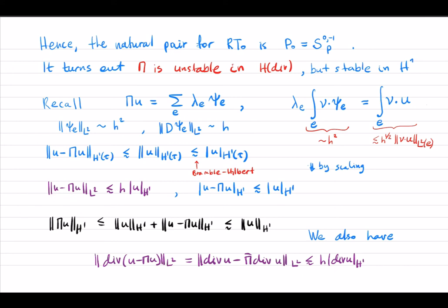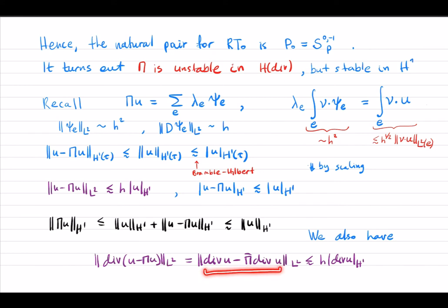To evaluate the H(div) error of u minus pi u, we also need the L2 norm of the divergence of the error. We write this as divergence u minus pi-bar times divergence u using the commuting diagram property, and then use the error estimate for the L2 orthogonal projection. This gives an error of order h times some norm of the divergence of u. So u minus pi u has error of order h for sufficiently smooth vector fields.